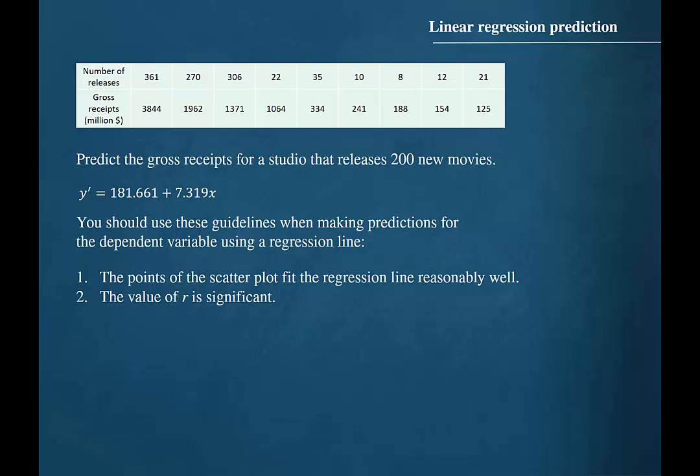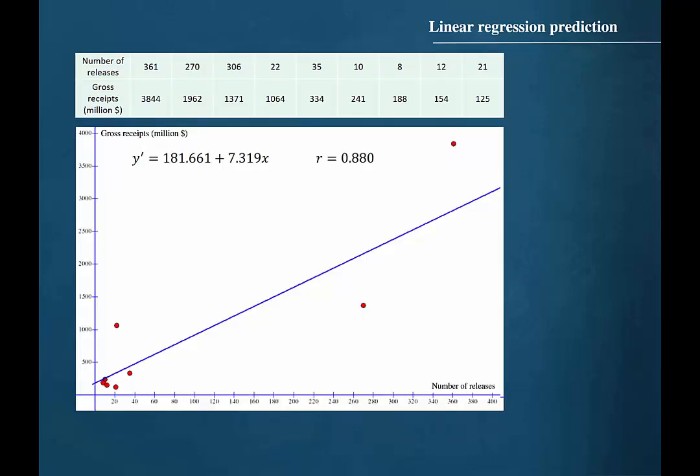The second guideline is that the value of r must be significant. r, the correlation coefficient for this set of data, is 0.880.